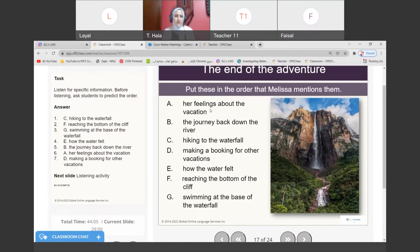Now she needs to describe her memories and feelings about the trip. And what did she decide after that? So what's the next point? Her feelings about the vacation. And what else? Making a booking for other vacations. So the order is: first C - hiking to the waterfall. Then F - reaching the bottom of the cliff. After they arrived at the waterfall, what did they do? They swam. G - swimming at the base of the waterfall. After they swam in the water, she described how nice the water was. E - how the water felt.